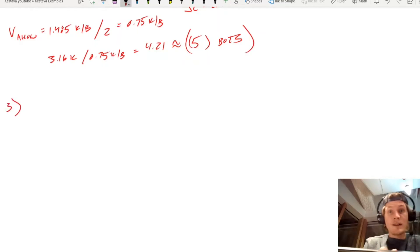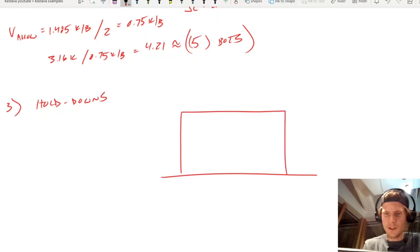All right, so number three, hold-downs. This is the last thing for your shear wall design. Coming back to it, let's draw our crude shear wall, 20 feet long. We have our third mode of failure.